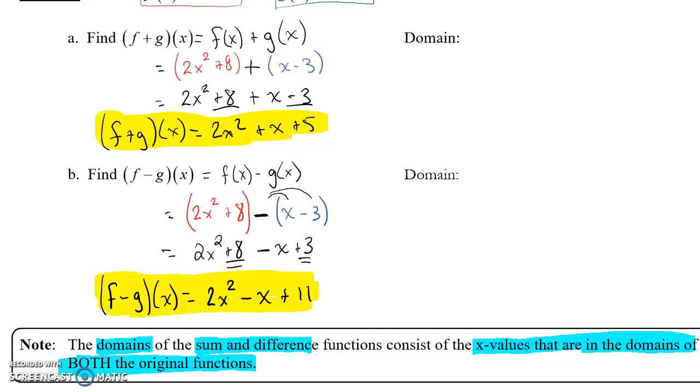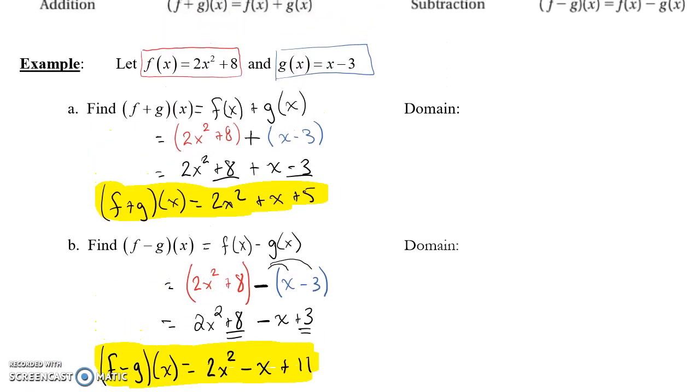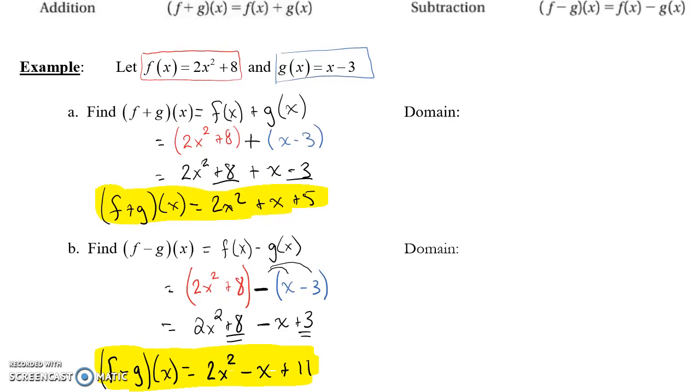So what that's saying is, we need to identify the domain of both original functions. So when we look at our function f, it's a quadratic binomial, there's nothing restricting what values we can choose as our input, or what x values we can use. So this would have a domain of all real numbers. Same thing, when I have a linear function, x to the first, I don't have any restrictions. So my domain is all real numbers.